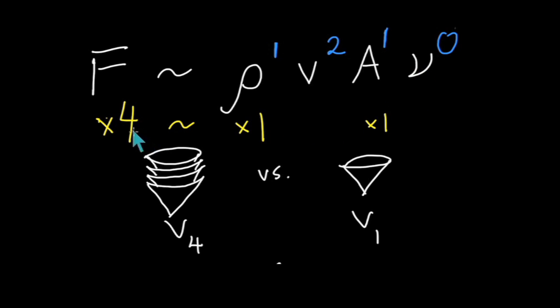So this factor of four on the left side has to be produced by the v squared. In other words, the v goes up by a factor of two, so that when it's squared, you get a factor of four. That means the correct answer should be two to one.